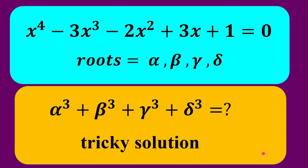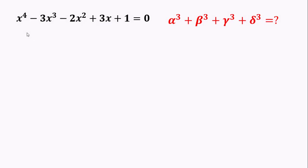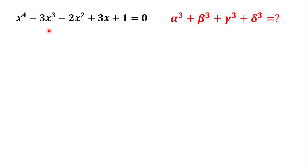Hi everyone, welcome back to Math Academy. In this video we're going to evaluate the sum of the cube of the roots of this equation: x to the power 4 minus 3 times x cubed minus 2 times x squared plus 3 times x plus 1 equals 0.